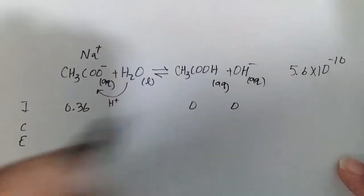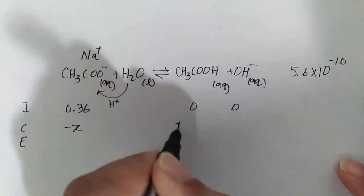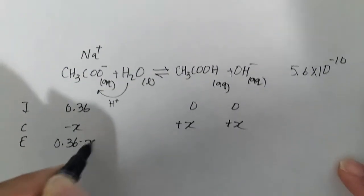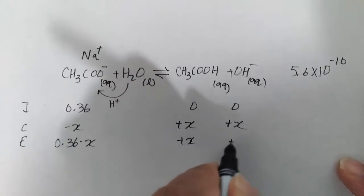We have 0, 0 here, so it's going to be minus x, plus x, plus x. And we have 0.36 minus x, plus x, plus x.